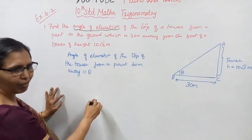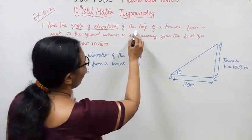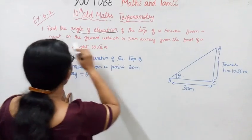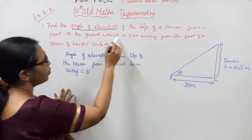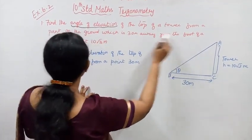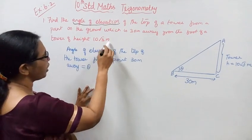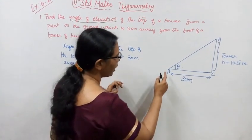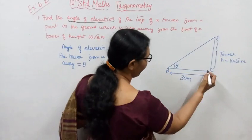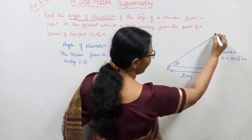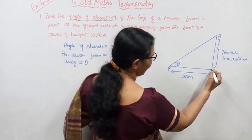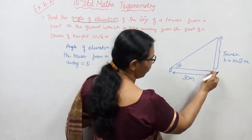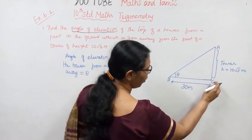Find the angle of elevation of the top of a tower from a point on the ground which is 30 meters away from the foot of a tower of height 10 root 3 meters. The point is on the ground level.